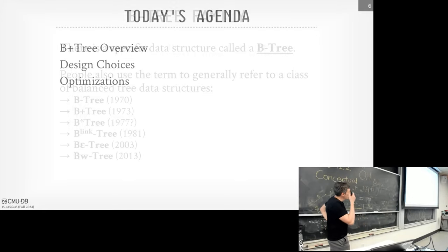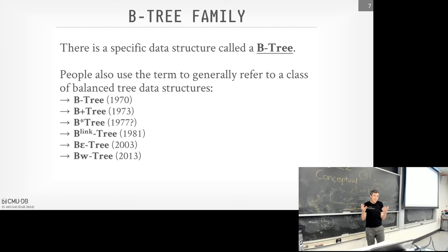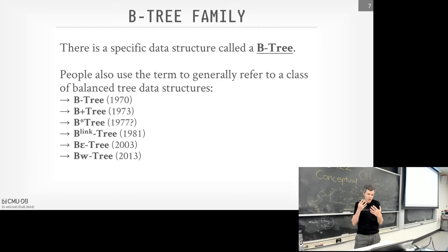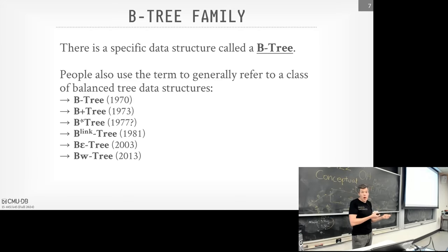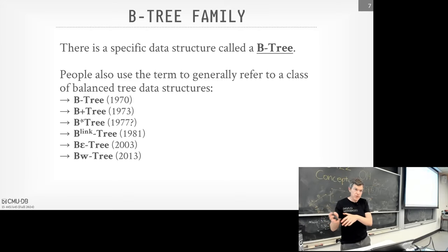A confusing thing about B+ trees is that they belong to a family called B trees, but there's also a specific data structure called a B tree. Systems like Postgres say they use B trees, but it's really a B+ tree. There's a meaningful distinction — the original B tree paper is from 1970 by Bayer and McCreight. Most people implement B+ trees, but not exactly as originally defined in the 70s — they use various optimizations developed over the years.